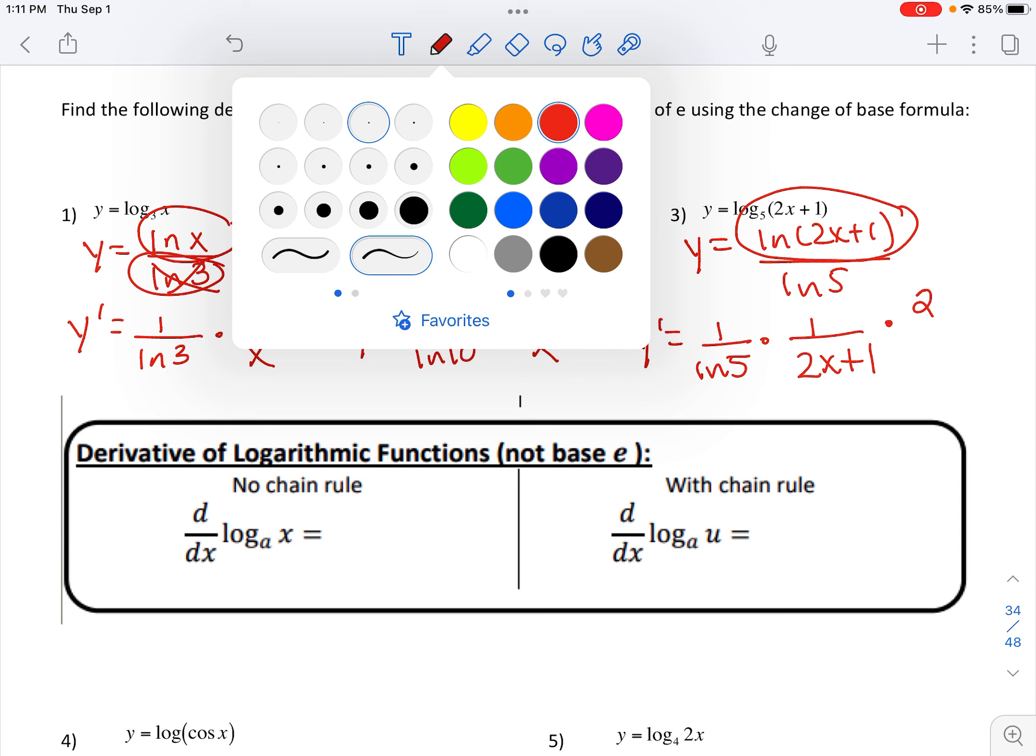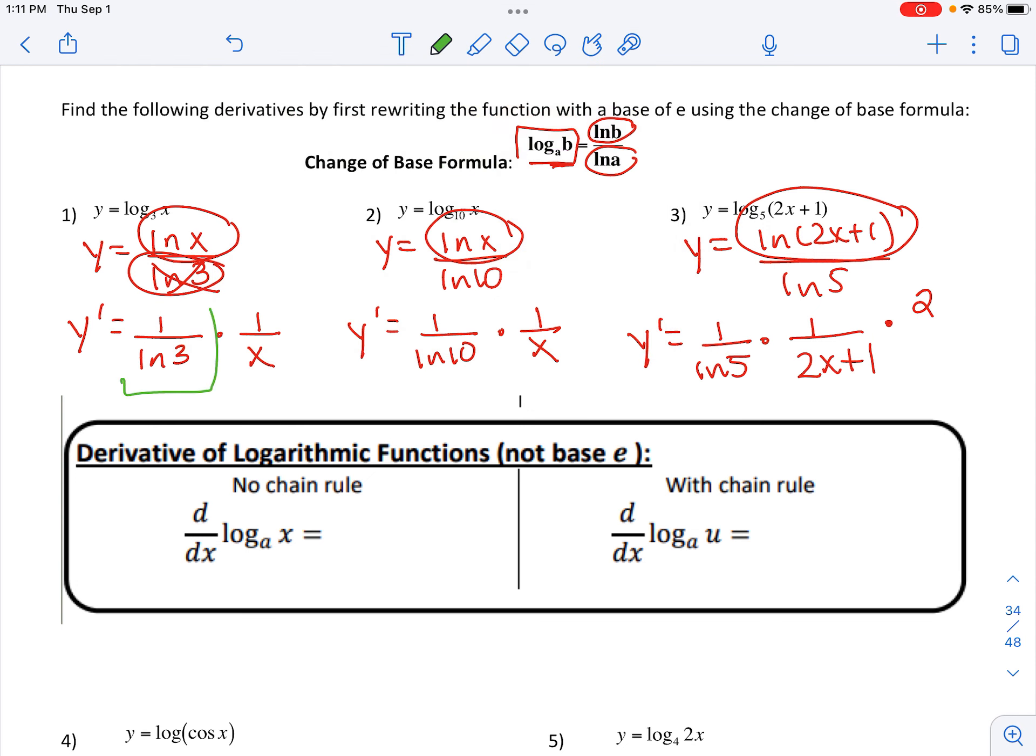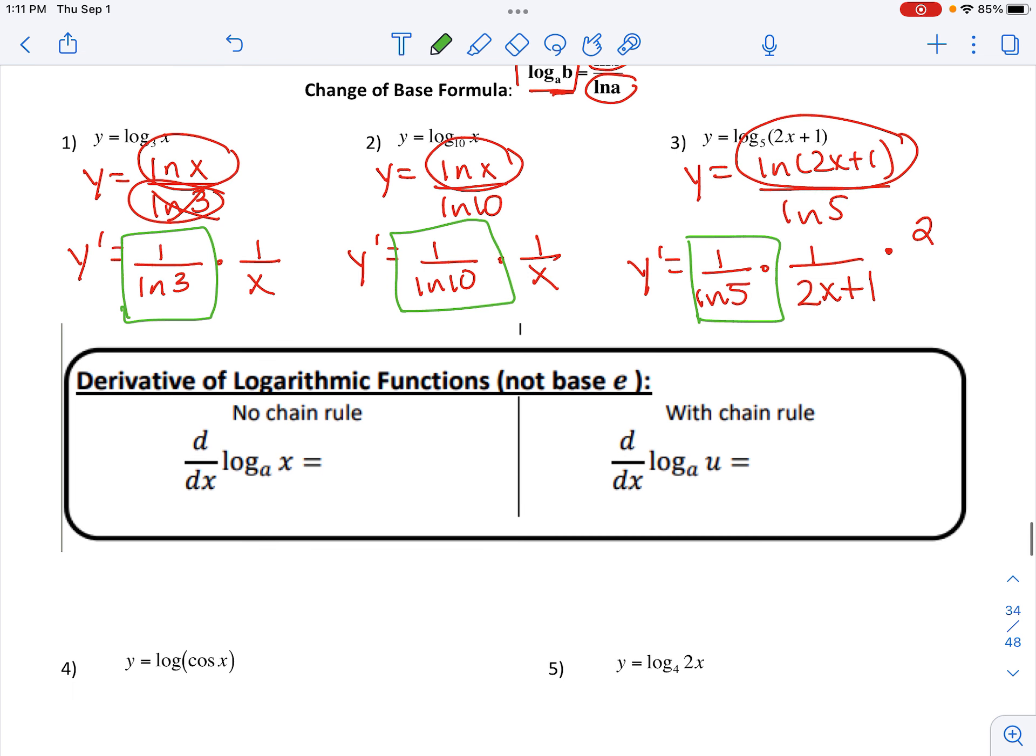The one thing you should notice in all these problems is the only thing that's extra when we have a base that's not a natural log is notice you have 1 over the natural log of whatever these bases are. So there's two ways you can go about these problems. You can always rewrite it using the change of base formula, or if you want to remember kind of the rule, the rule is it's just 1 over natural log of a, whatever this is, and then 1 over x. In this case, same thing, but you have a chain rule, so du over dx.